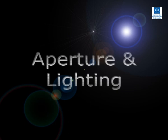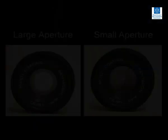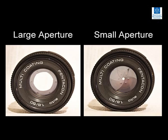The aperture or iris is the opening in the lens that restricts how much light reaches the image sensor. Two different apertures are shown here. More light reaches the image sensor with a large aperture, as seen on the left, than with a small aperture, as seen on the right.